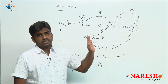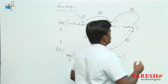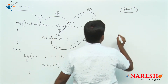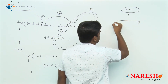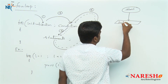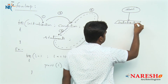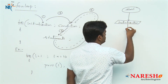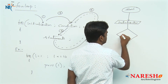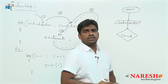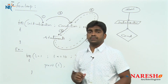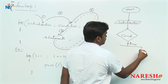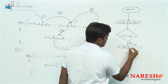This is the flow — the syntax. The same thing, if you want to convert into a flowchart: this is the start. First it will execute the initialization statement — that is a statement, not a condition, so we represent it with a parallelogram. After initialization it will check the condition — conditions are represented with a rhombus. If the condition is true, the control moves inside and executes all the statements you defined.